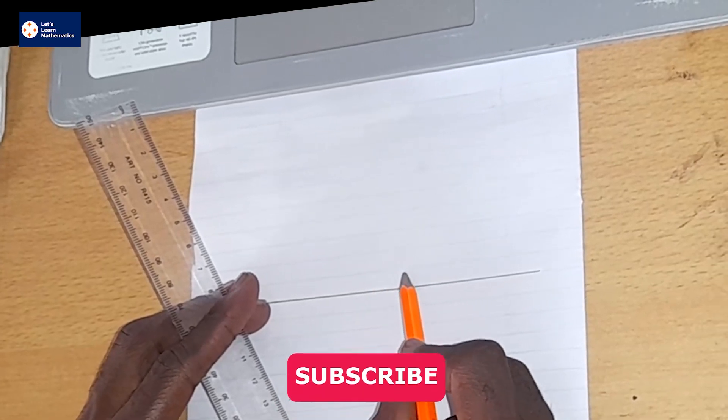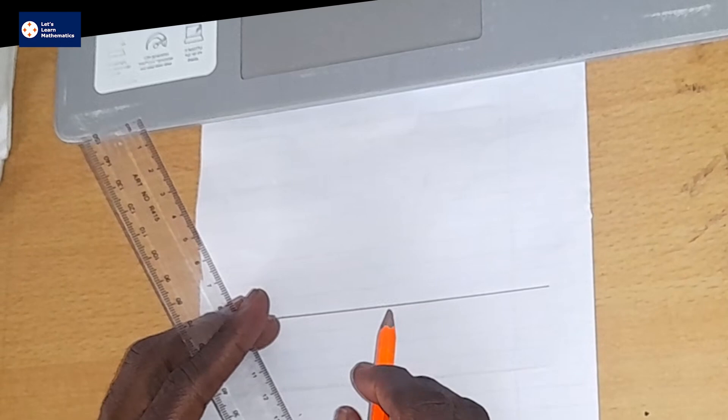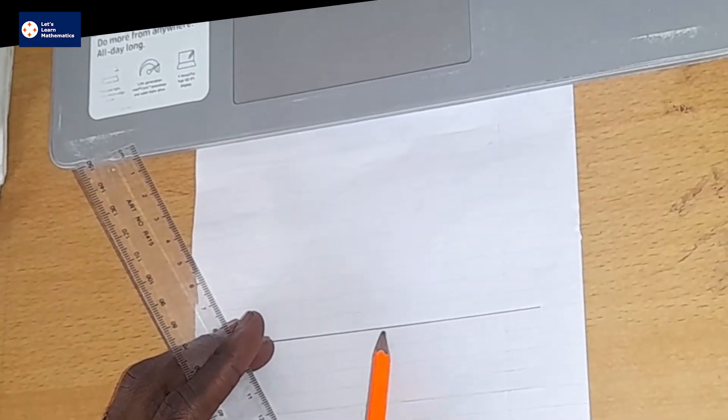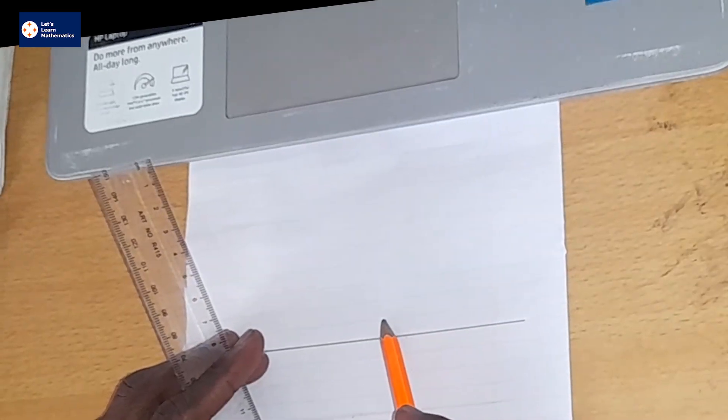So if 180 degrees is at the top, then it means I have to calculate the measure of the angle that I have to draw down here to be able to add it to the 180 at the top.